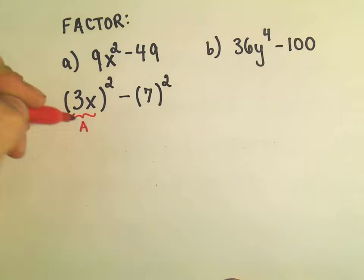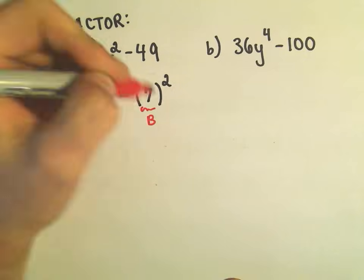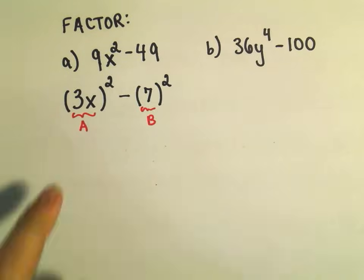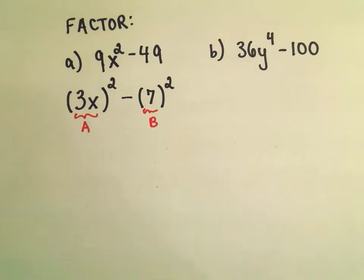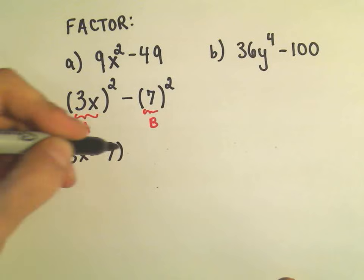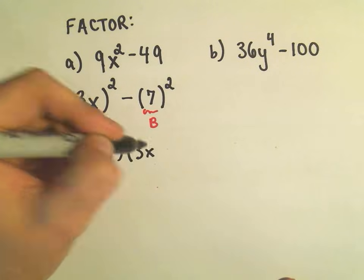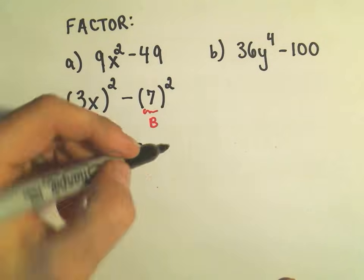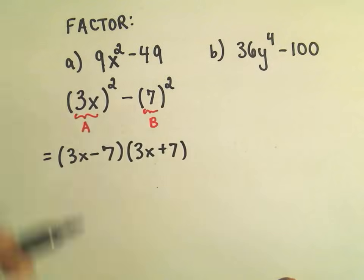So this is our A, this is our B, and we have A squared minus B squared. Well, that factors. It says we take A, which is 3x, and it doesn't matter the order in which you put the negative and the positive in the parentheses. So we'll take 3x minus 7 and 3x plus 7, and now we have it factored.